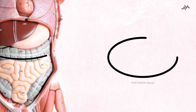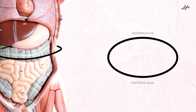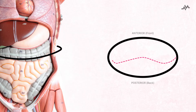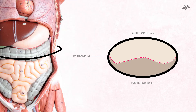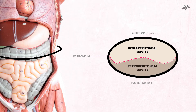Within the abdominal cavity, there are two spaces that are divided by the peritoneum, with each space containing its own structures. We call these spaces and the organs within them the intraperitoneal and retroperitoneal space and structures.